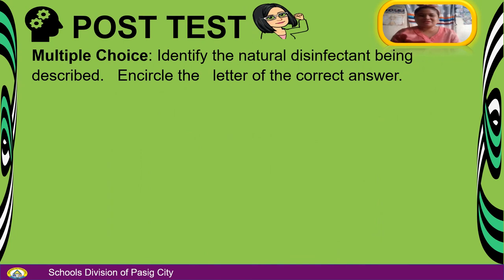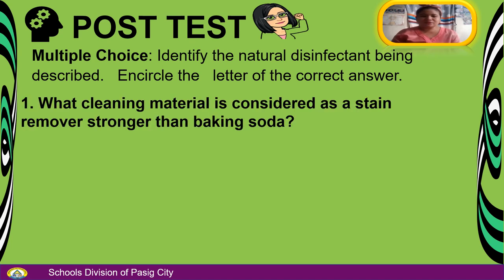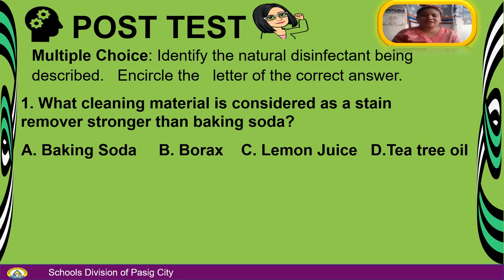Post-test. Identify the natural disinfectant being described and encircle the letter of the correct answer. Number 1: What cleaning material is considered a stain remover stronger than baking soda? A. Baking soda. B. Borax. C. Lemon juice. D. Tea tree oil. The answer is B — Borax.